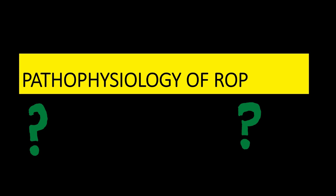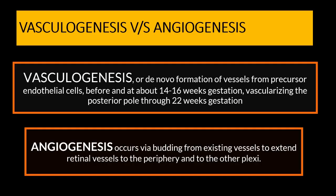To understand what is happening in the retina in ROP, it is important to distinguish vasculogenesis from angiogenesis. Vasculogenesis means de novo formation of vessels from precursor endothelial cells; it occurs from about 14 to 16 weeks of gestation and completes vascularization of the posterior pole by 22 weeks. After that, angiogenesis takes over — existing vascular channels start branching and budding further from already-developed vessels.